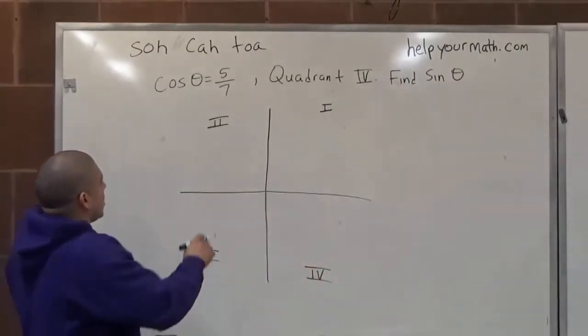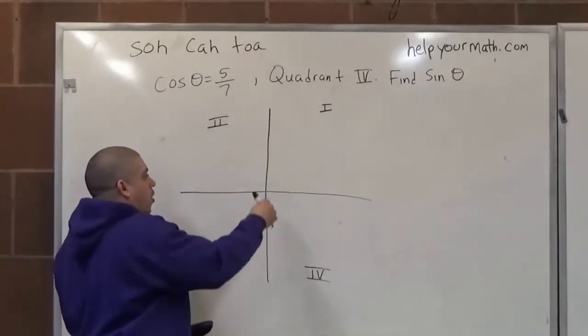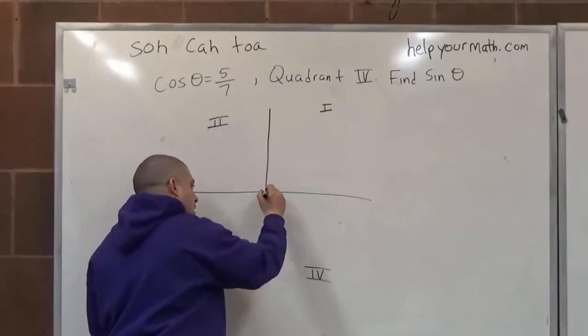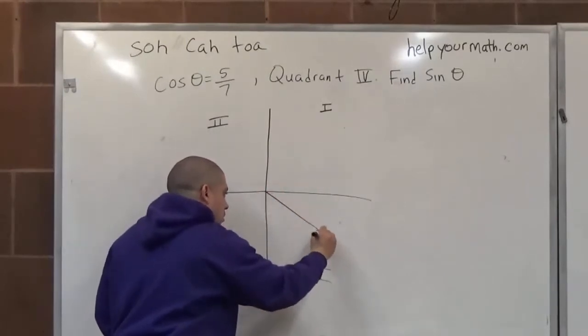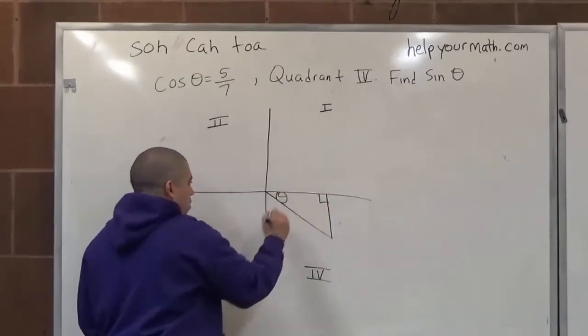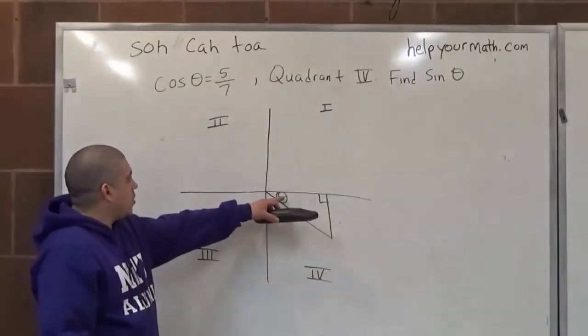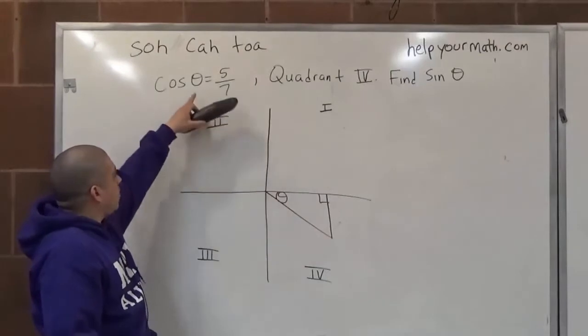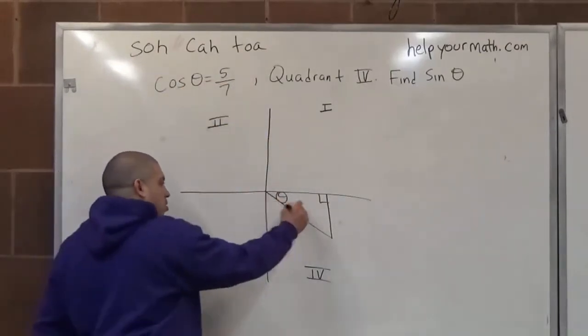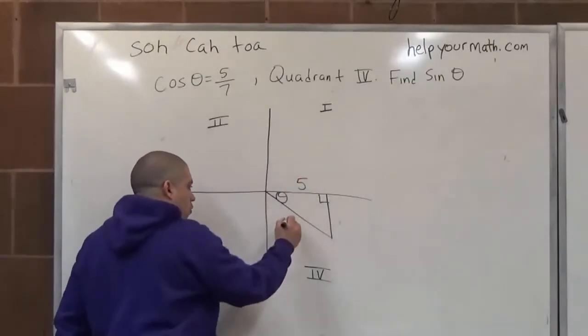Cosine of theta terminates in quadrant 4, so it basically goes all around and finishes in this quadrant. The cosine of theta is 5 over 7, and cosine is adjacent over hypotenuse, so it's adjacent 5 over 7.